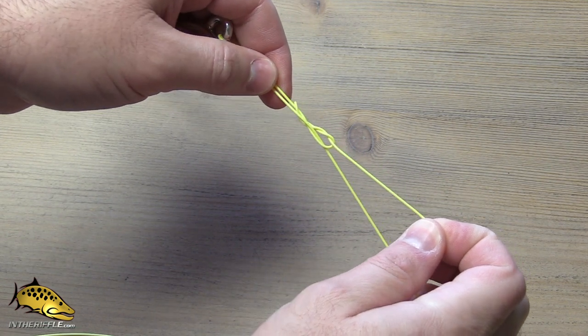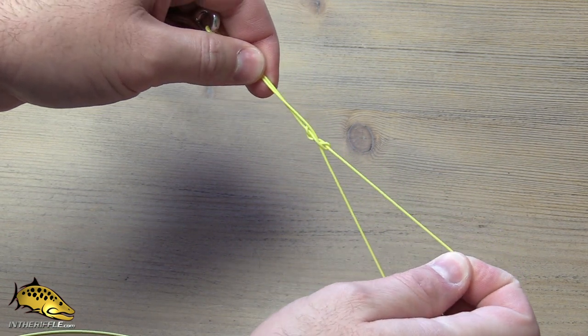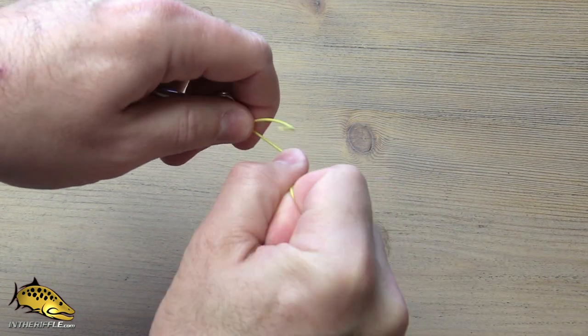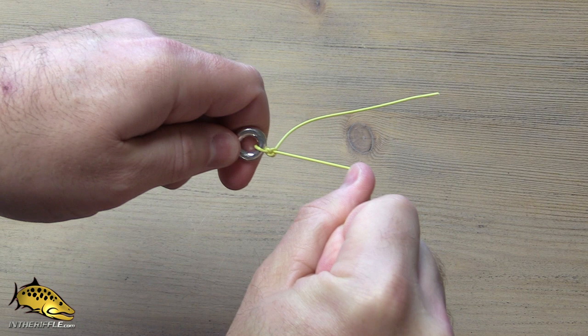It's pretty easy to tie but a bit of a brain teaser when you first look at the diagrams. Tighten it down, and of course use some water or saliva if you're tying it with mono. Cinch it down.